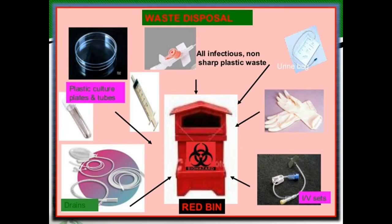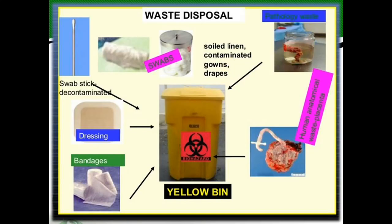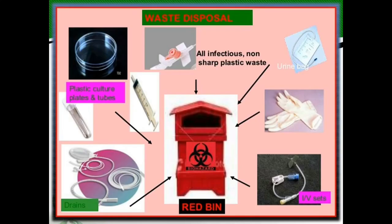Most infectious plastic items go to the red bin — gloves, IV sets, drains, syringes without needles, plastic culture plates, petri dishes, and all plastic waste except sharps. The yellow bin handles infectious non-plastic waste like swabs, cotton, animal tissues, and bandages, which go to incineration. Red bin contents go to disinfection and then shredding, and may sometimes be recycled since the material is plastic.